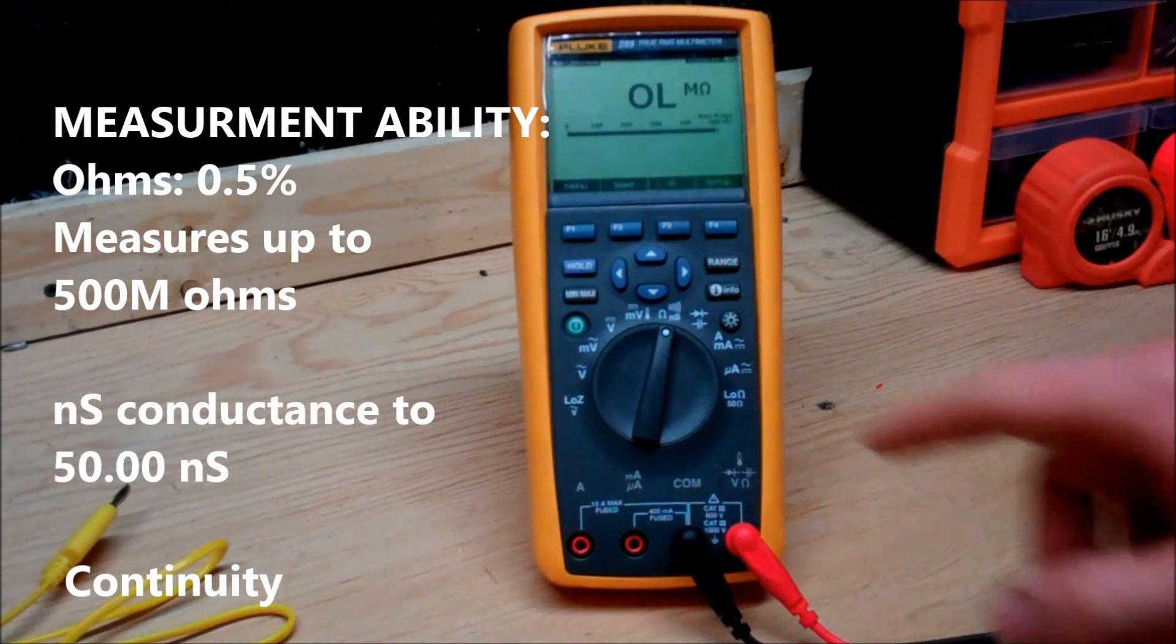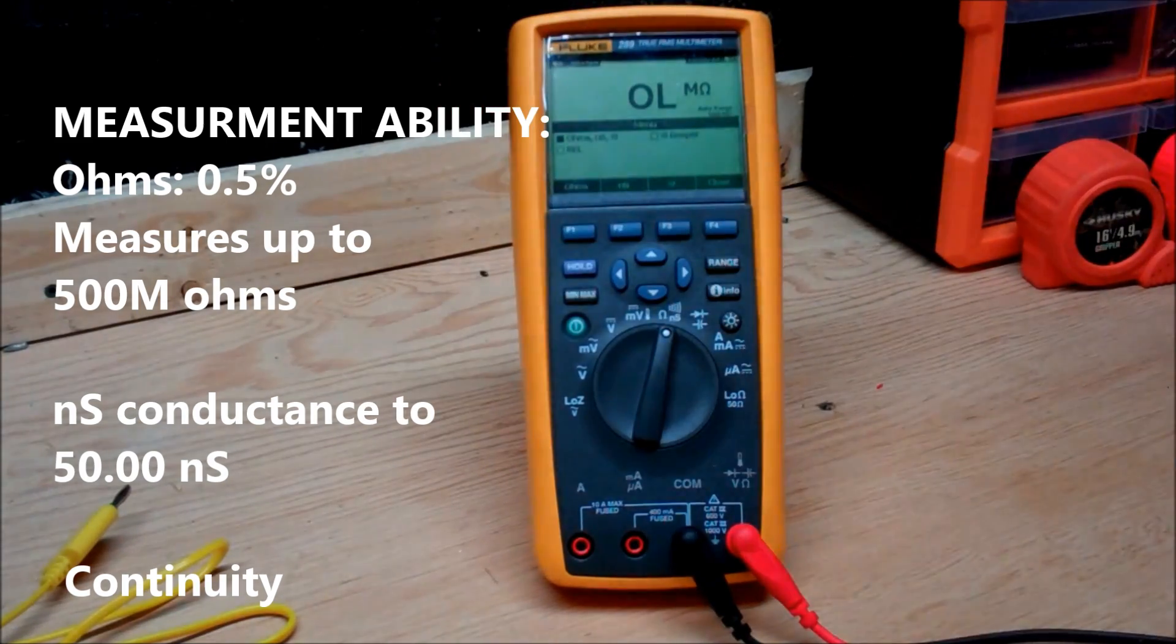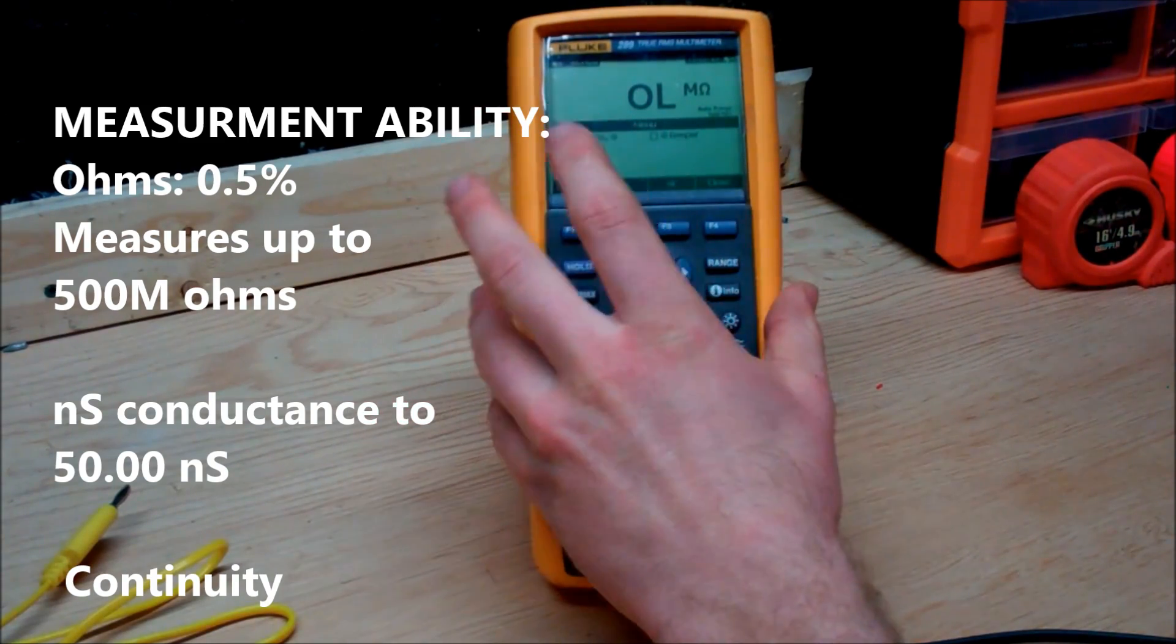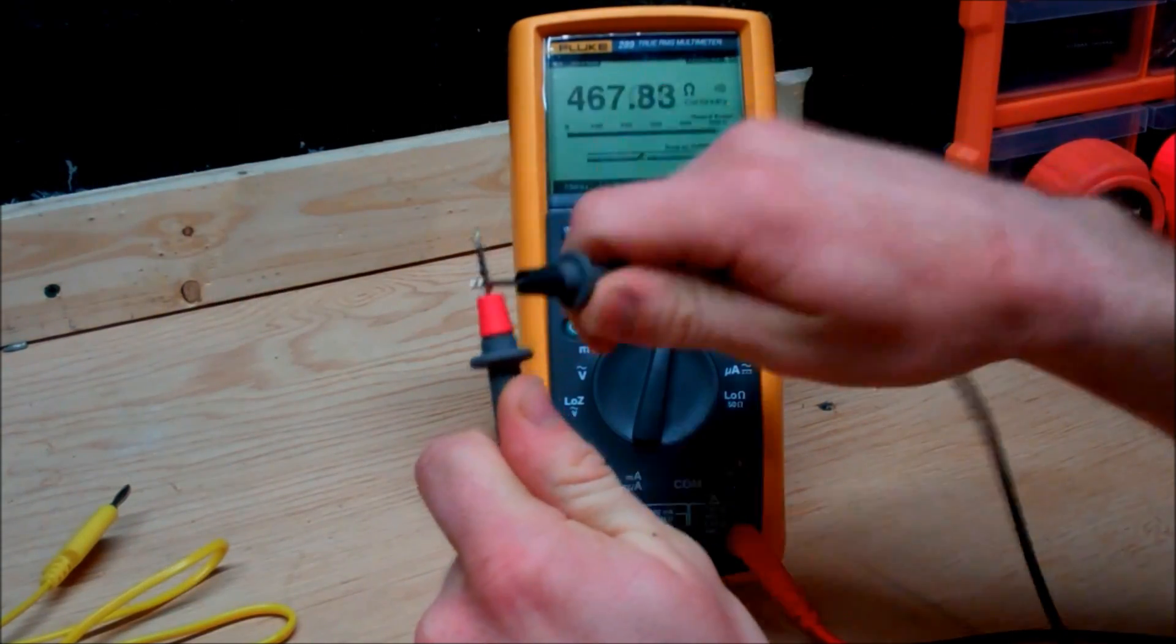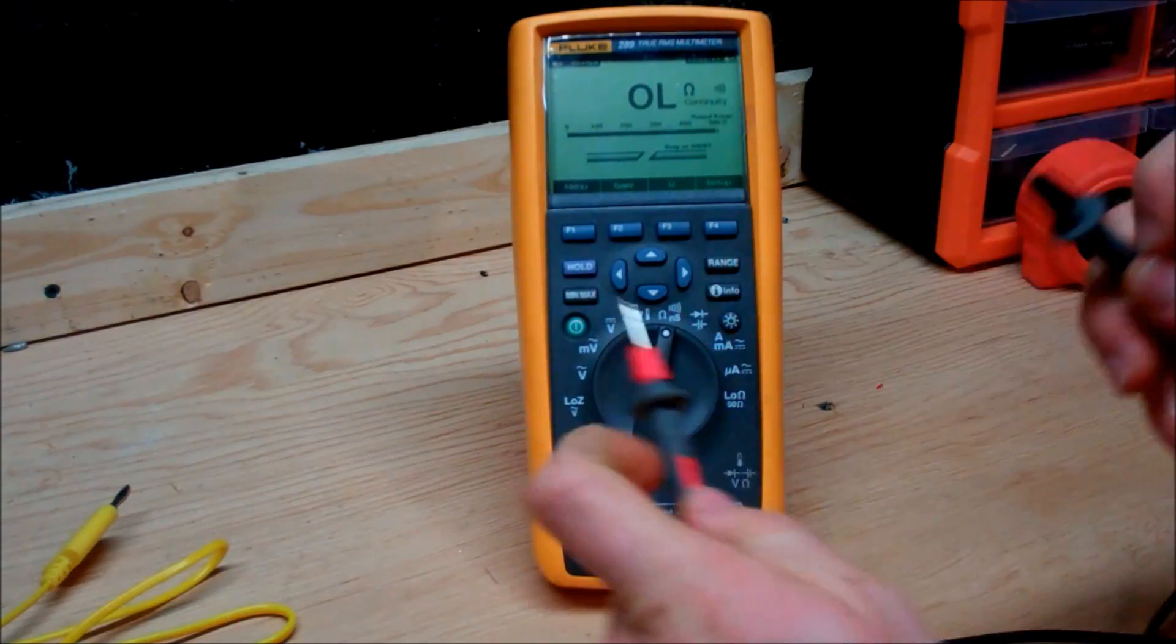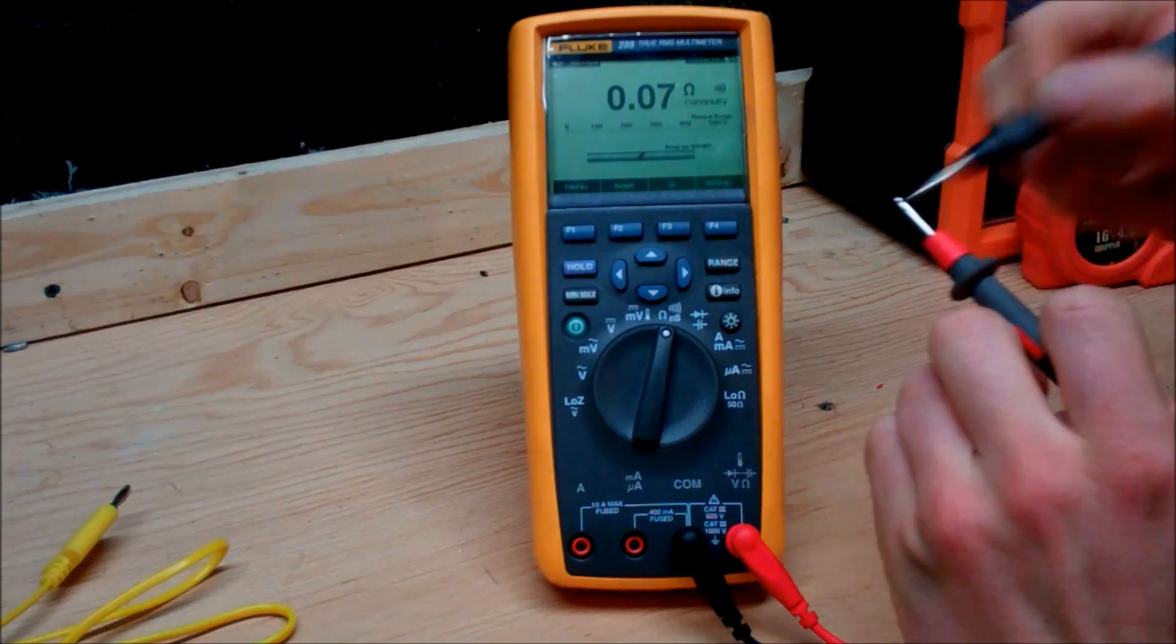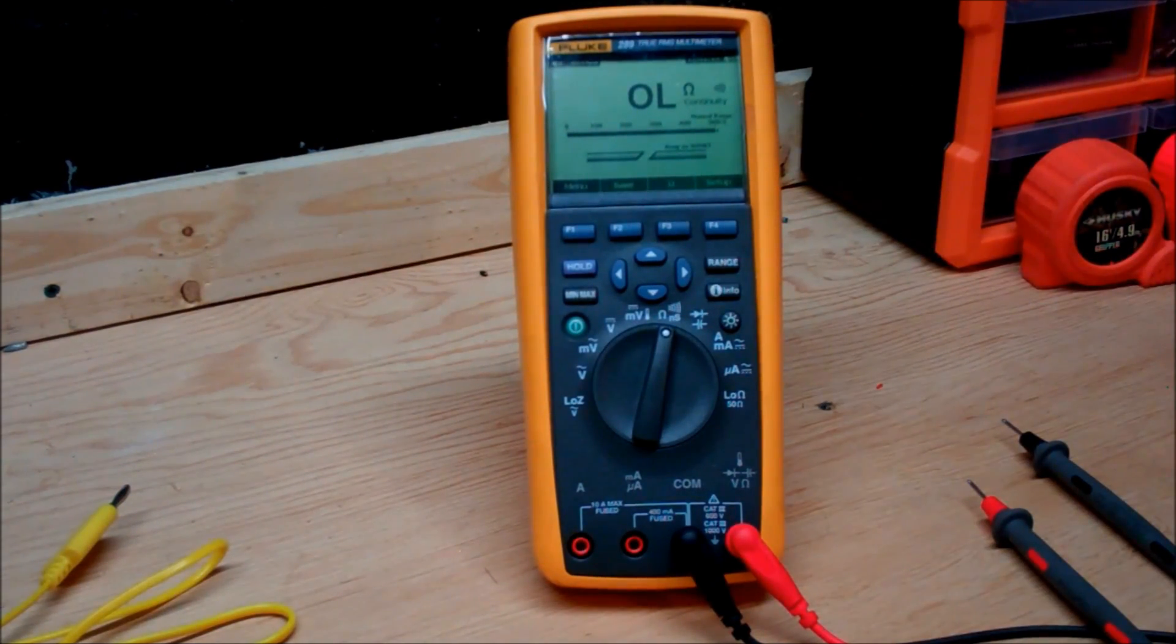The next setting we have on this multimeter is ohms, continuity, and nano siemens. If we pull up the menu here you can see that you have the ohms, the relative, and the beeper which is continuity. Of course it's got that Fluke awesome ability and it really registers as fast as I go. Any type of continuity is registered and indicated. It's sort of cool right here when you do have that physical connection, as you can see on the screen it shows you that there is a connection. Little feature but you gotta admit it's sort of neat.